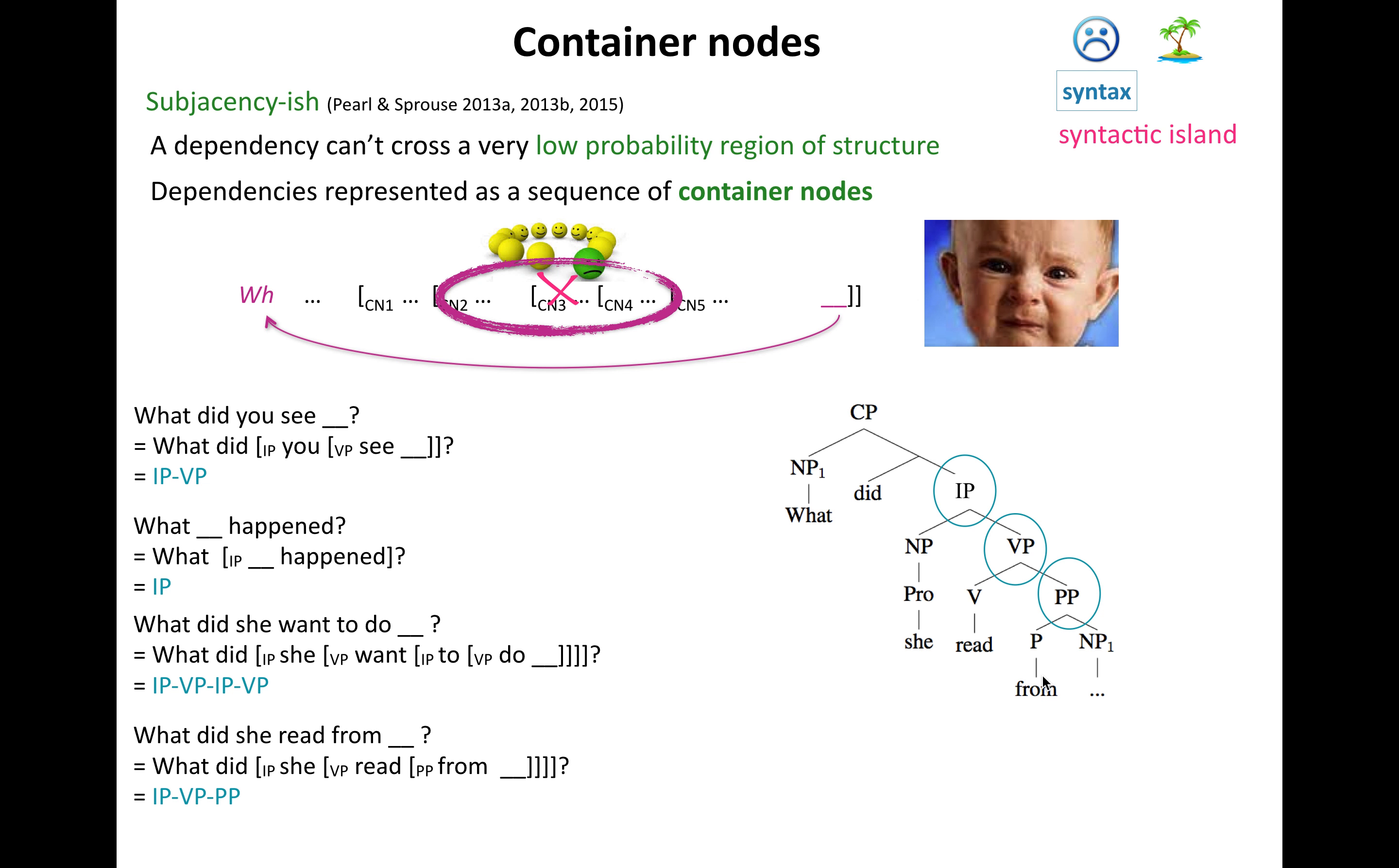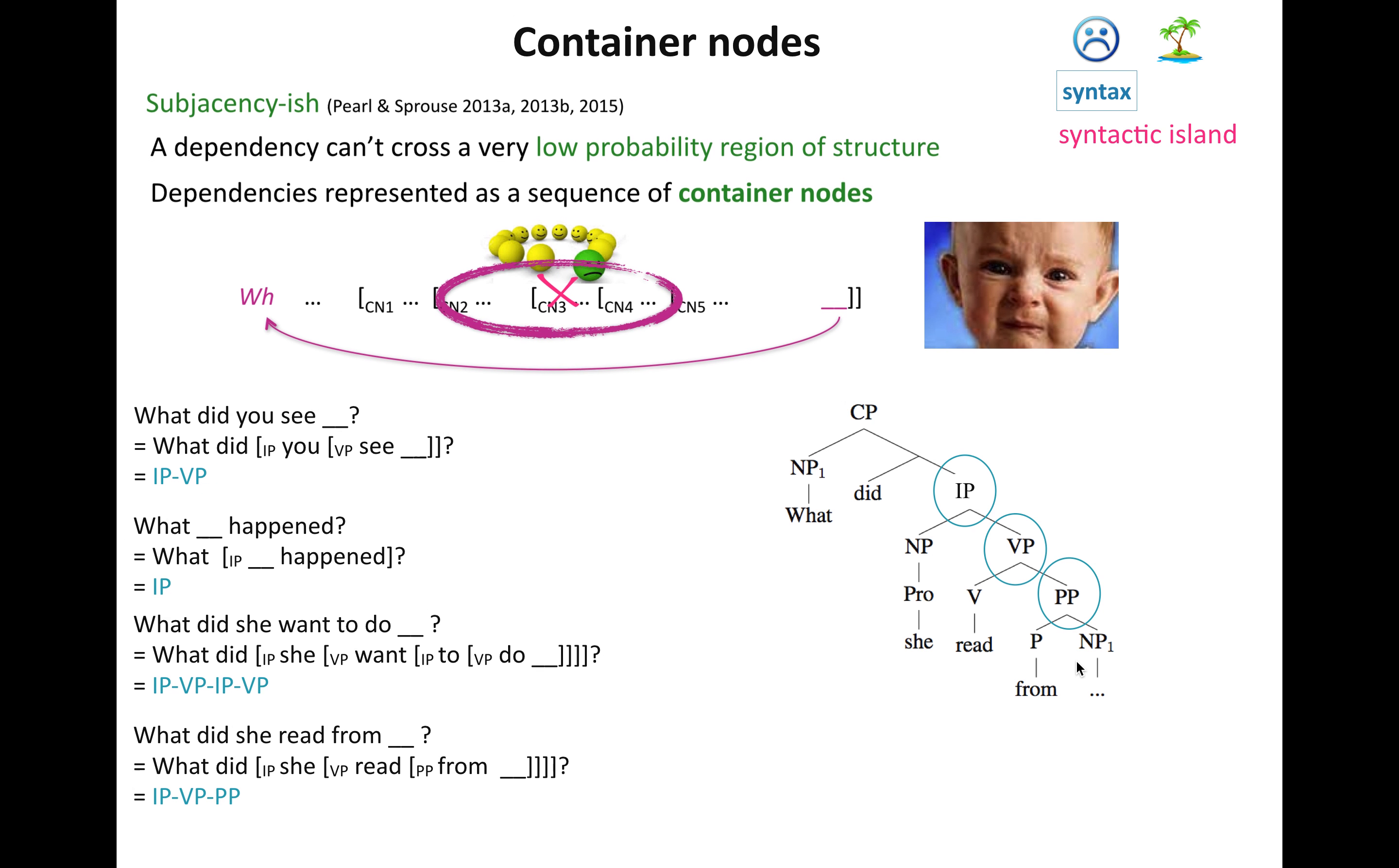So what did she read from? So going through our IP, read is our verb phrase, and then the prepositional phrase, from until we finally get to our gap. So this is how, in some sense, we're flattening out the structure to be just a sequence of these phrasal, these structural nodes, that in some sense contain the dependency.